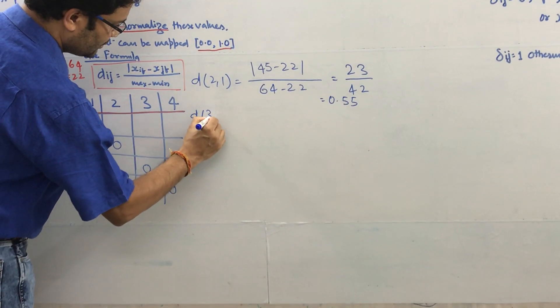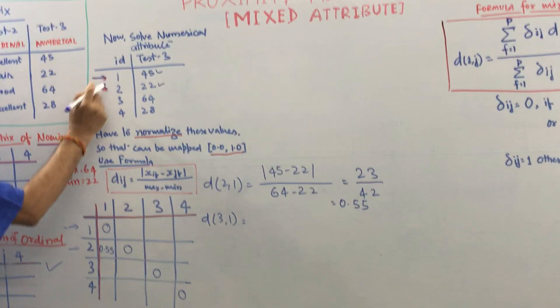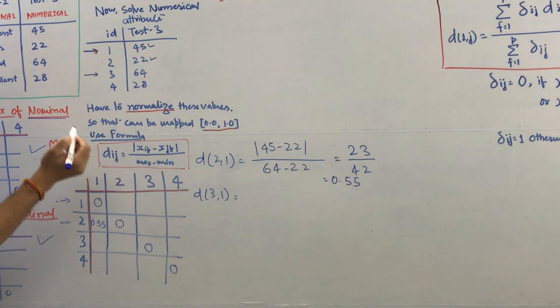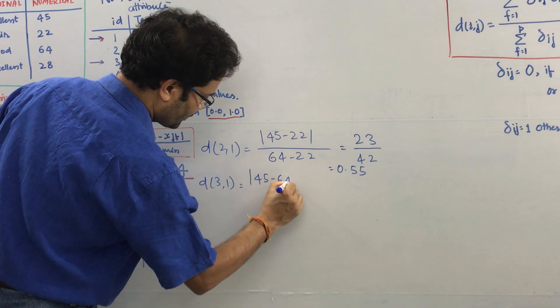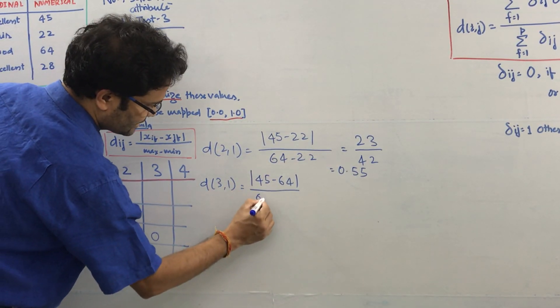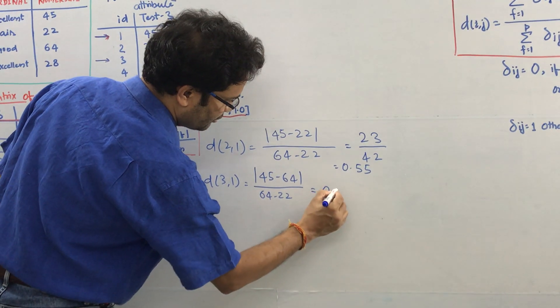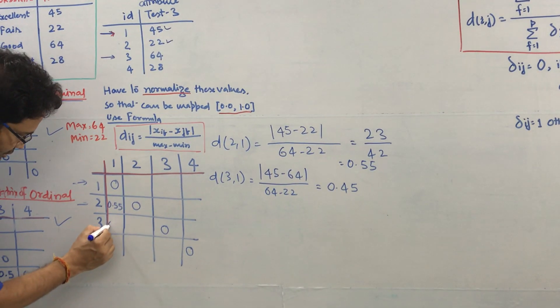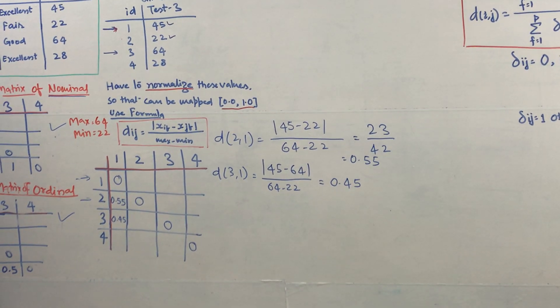The same way we can find out d(3,1). This time this is the i and this is the j. So 45, 64, max min would be the same right. If you calculate it becomes 0.45, so this is 0.45.